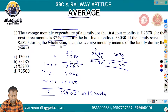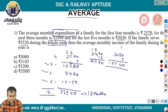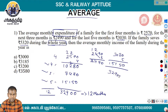For a month, the family expenditure is 32,900 divided by 12 months. The average monthly income of the family is what we need to find. The expenditure is 3,290 per month. We need to find the savings.